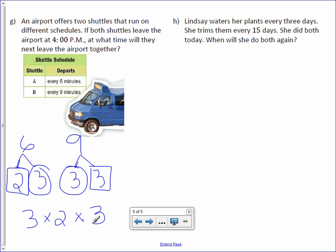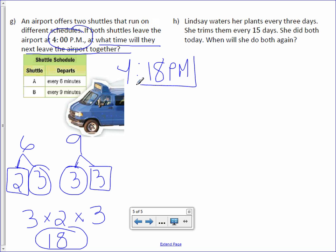3 times 2 is 6, 6 times 3 is 18. Now, it's not asking for the least common multiple. The question says, what time will they next leave the airport together? If they leave together at 4:00 p.m., and it's 18 minutes before they leave together again, our time would be 4:18 p.m. So we need to make sure we're answering the question.